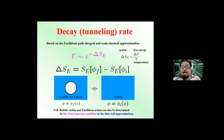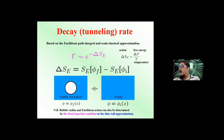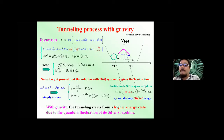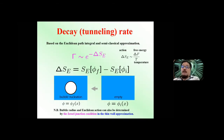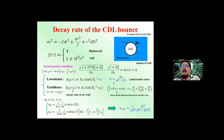The thin-wall approximation limit applies when the energy difference between the false and true vacua is much smaller than the potential barrier height. In this case, the wall thickness of the bubble is much smaller than the bubble radius itself, and we can use the Israel junction conditions. Let me show how to estimate the bounce radius and bouncing action using the Israel junction condition. We assume the outside bubble is false vacuum (Minkowski) and the inside is AdS (lower potential energy). The Israel junction condition states that the difference of extrinsic curvatures inside and outside is compensated by the wall tension, giving a simple ordinary differential equation.